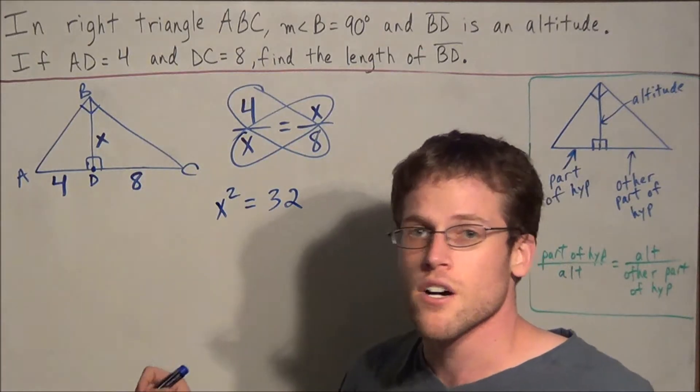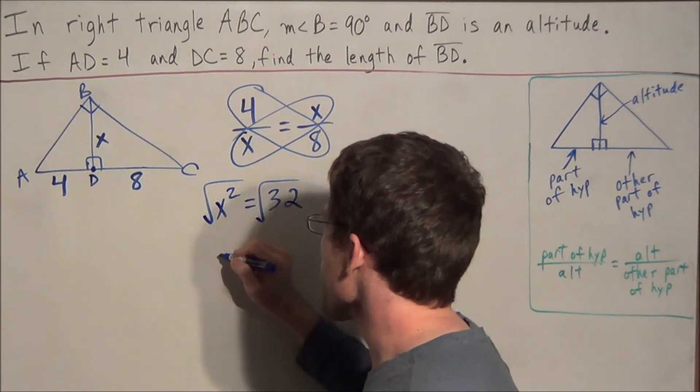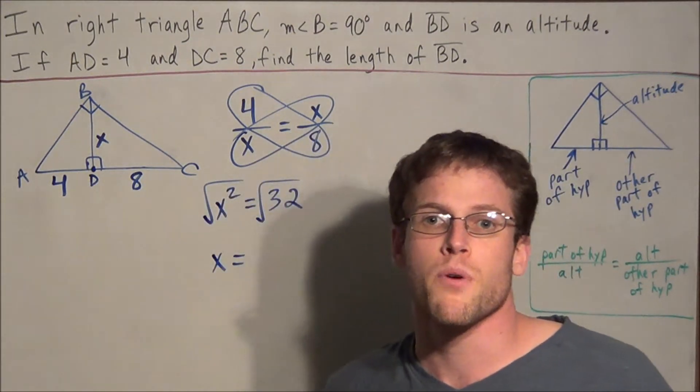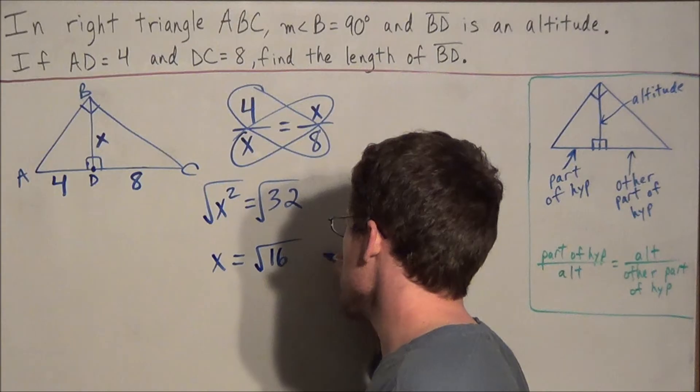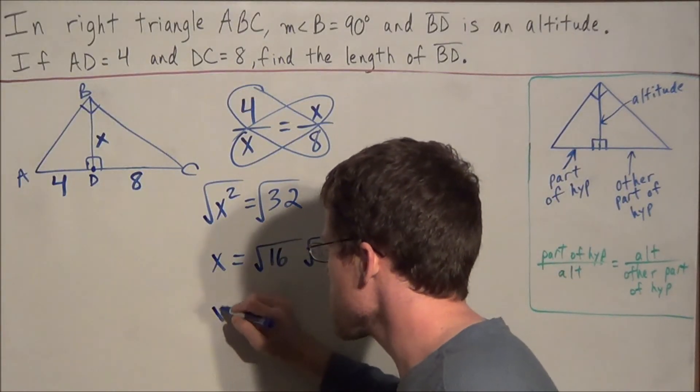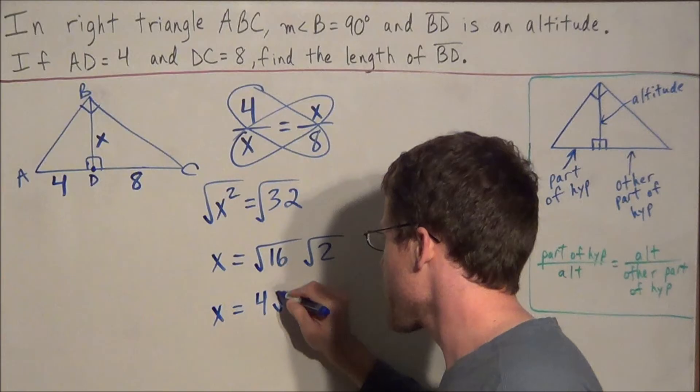So to get X by itself, all we need to do is take the square root of both sides. And we have X equals the square root of 32. The goal is to find the biggest perfect square factor of 32, which in this case is going to be 16. And we have 16 times 2 is 32, so to simplify this, the square root of 16 is 4, and we have 4 radical 2.